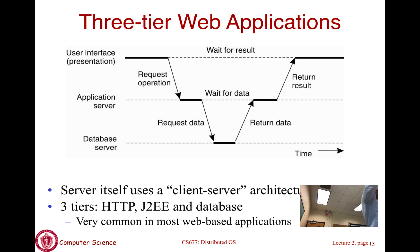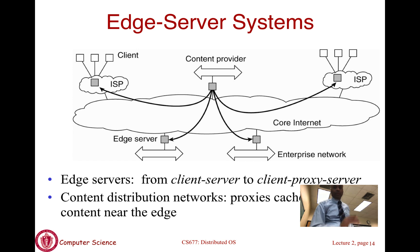Many web applications — your online stores and applications you access on a day-to-day basis — use this model, with the important consideration that the application server shown as one piece might actually be many different pieces. A typical tiering: the client is the web browser; on the server side you might have an HTTP server receiving web requests, then a PHP server, Python Django, or Java enterprise server implementing the application code — that is your application server — and then a back-end database where all the data is stored. This is just one example of components used to build a web application.